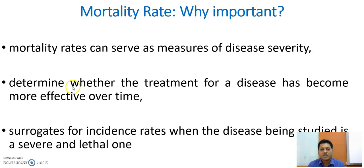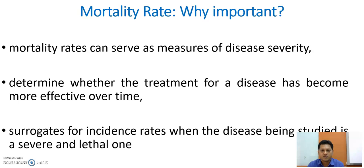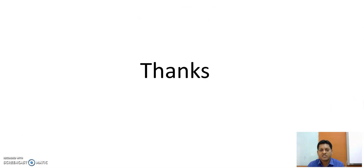Secondly, mortality rate helps determine whether treatment for a disease has become more effective over time. For example, for treating bacterial infections, many antibiotics have been invented — first, second, third, and fourth generation antibiotics — upgraded due to the changing nature of disease processes. Mortality rate also helps identify differential treatment options and can serve as a surrogate for the incidence rate when the disease being studied is severe and lethal.